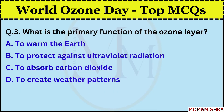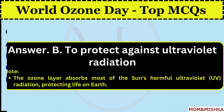What is the primary function of the ozone layer? To protect against ultraviolet radiation. Option B. The ozone layer absorbs most of the sun's harmful ultraviolet radiation, protecting life on Earth.